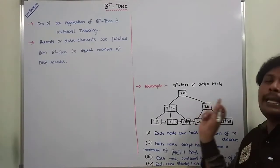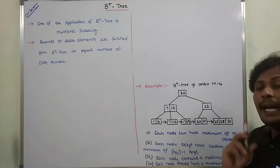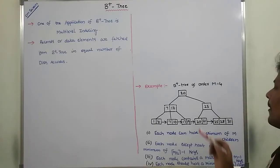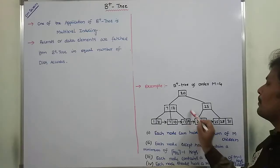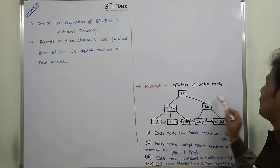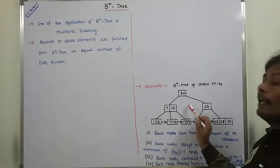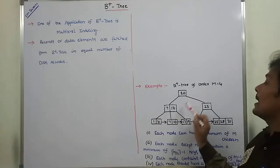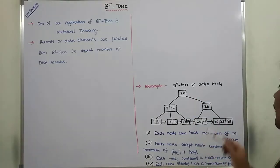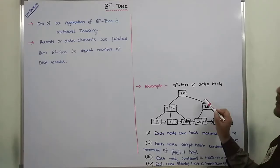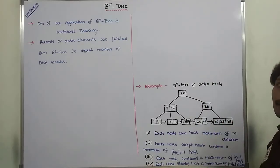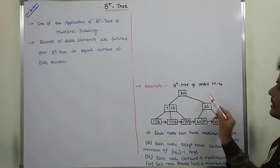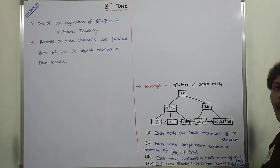B plus tree also satisfies the binary search tree properties. All the elements in the left sub-tree have values less than the root node, and all the elements in the right sub-tree have values greater than the root node. So B plus tree satisfies the binary search tree property.